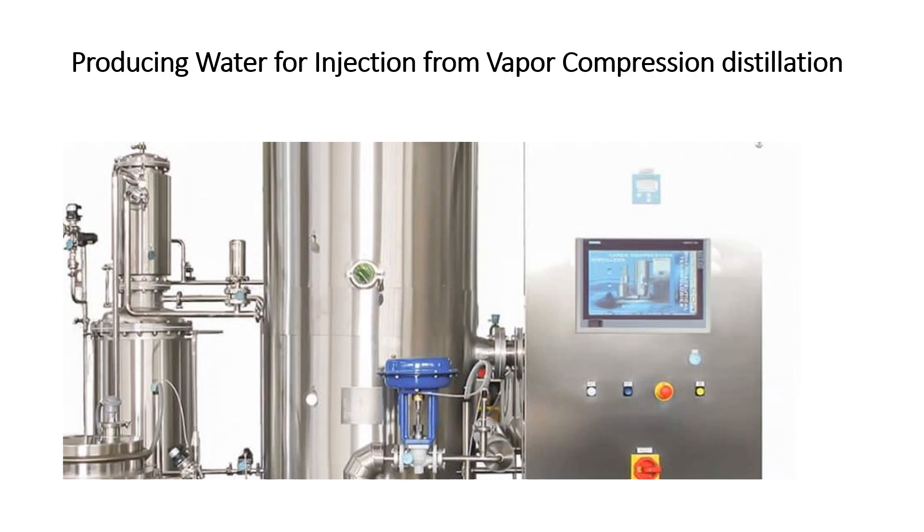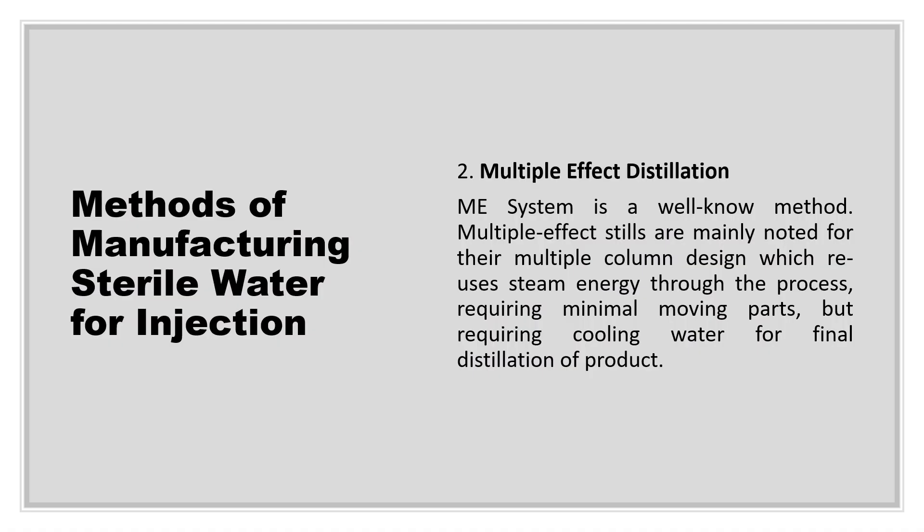This is the unit for vapor compression distillation — you can see the vapors being compressed using steam or electrical energy. The second widely used method is multiple effect distillation. The principle remains the same: vapors are condensed and water is formed. Multiple effect distillation is noted for its multiple column design, which reuses steam energy and requires minimal moving parts but requires cooling water for final distillation. Water for injection is generally kept at around 80°C as formed, to maintain sterility during formulation.